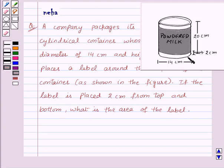So here we have a cylindrical container whose diameter of the base is 14 centimeters, height is 20 centimeters, and the label is placed 2 centimeters from the top and the bottom. Now before proceeding for the solution, let's recall...